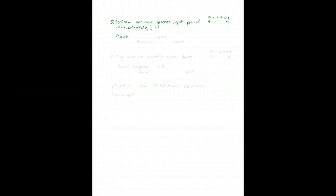Next: perform services of $1,000 and get paid immediately — the best kind! Cash will go up, and we've earned revenue. Revenue is part of owner's equity, and it makes owner's equity bigger. So the journal entry increases Cash — increase assets with debits, so debit Cash for $1,000 — and credits the revenue account, which is part of owner's equity, for $1,000. Owner's equity is now increased.